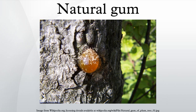Natural gums produced by bacterial fermentation include polyelectrolytes such as gellan gum, and uncharged gums such as xanthan gum.